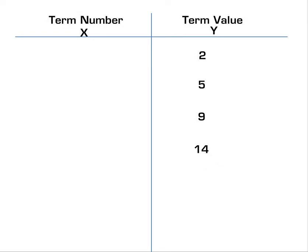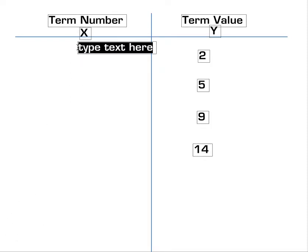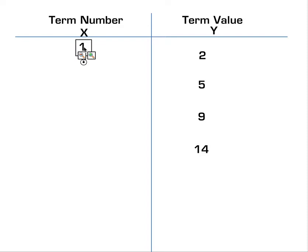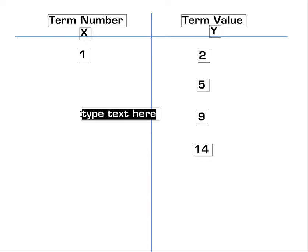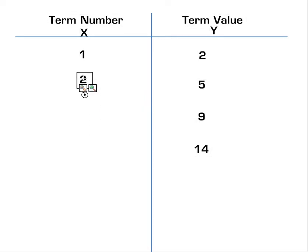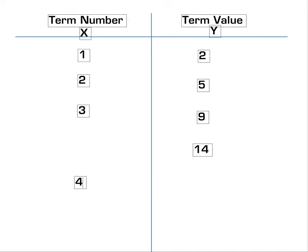And the X values are in sequence, counting by ones. So we should have, and they partner up. So we've got 1, 2, the 3rd term, and then we've got the 4th term.